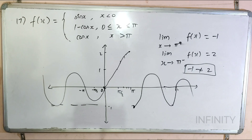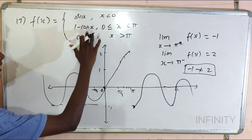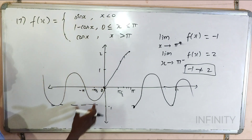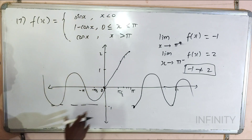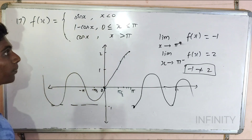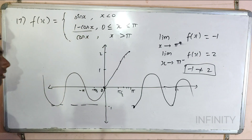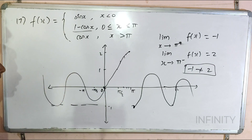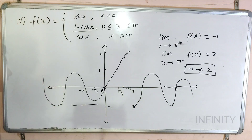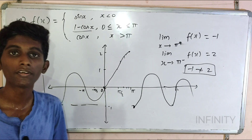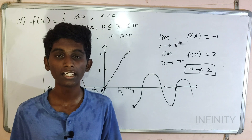So that's why we first looked at the sin x graph, then the 1-minus-cos-x graph. For x less than 0, it's the sin x graph. For 0 to pi, it's the 1-minus-cos-x graph. We can check the limit at each point. In the next video, we will see the eighth problem. If you like, share and subscribe. Thank you, friends.